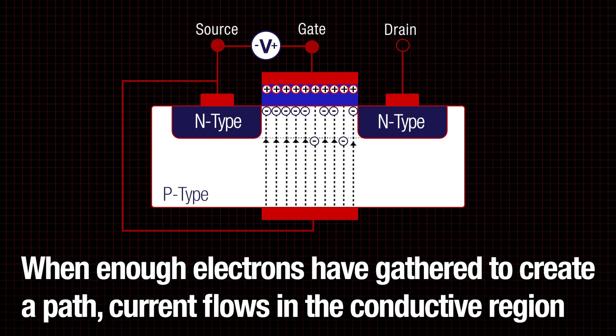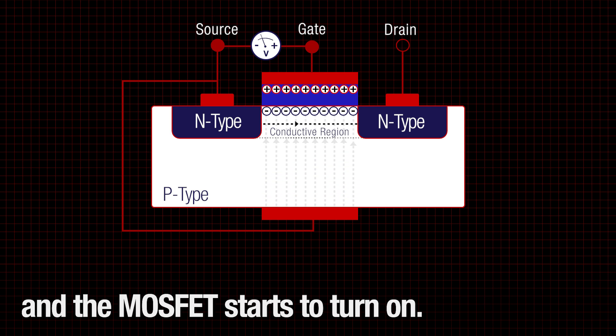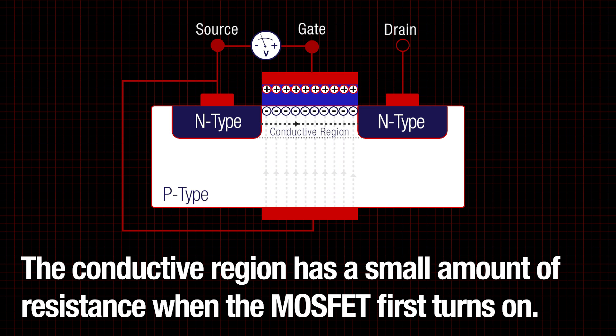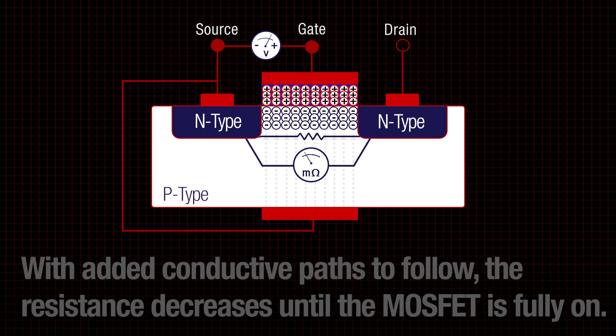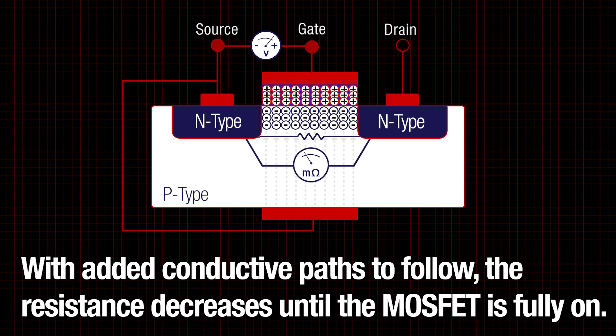When enough electrons have gathered to create a path, current flows in the conductive region and the MOSFET starts to turn on. The conductive region has a small amount of resistance when the MOSFET first turns on. As the capacitor charges, the electron field becomes more crowded. With added conductive paths to follow, the resistance decreases until the MOSFET is fully on.